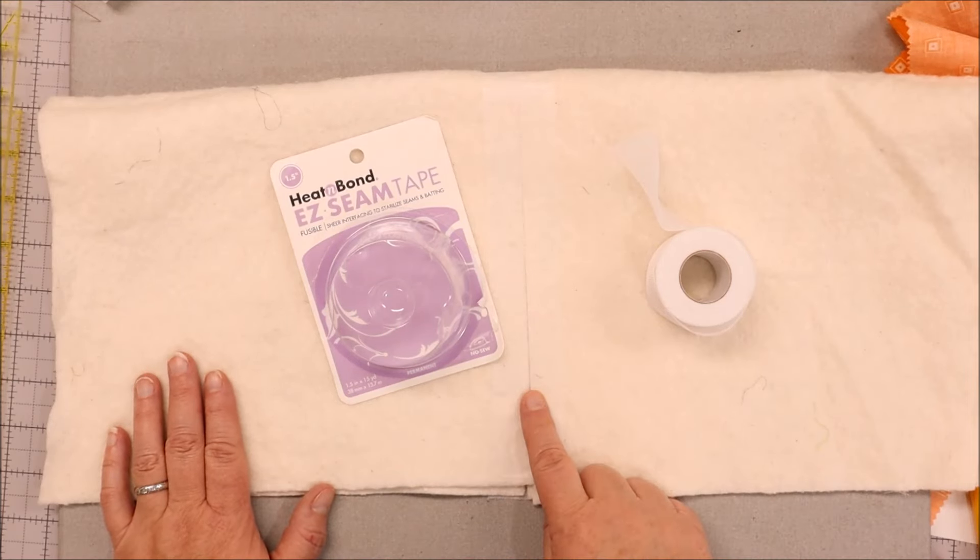And if I give it a little tug, it just stays together really nicely. That is a quick, simple process of using your easy seam tape by Heat and Bond. And this is the one and a half inch and it is 15 yards. So it will do quite a bit of these joints.